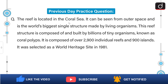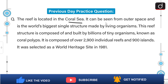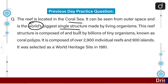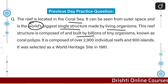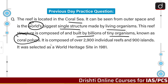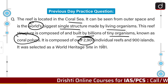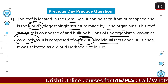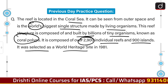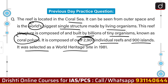The reef is located in the Coral Sea and it can be seen from outer space. It is the world's biggest single structure made by living organisms. This reef structure is composed of and built by billions of tiny organisms known as coral polyps. It is composed of over 2,900 individual reefs and 900 islands and it was selected as a World Heritage Site in 1981.